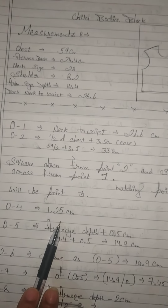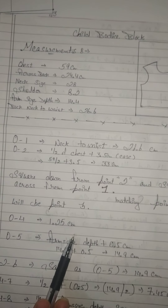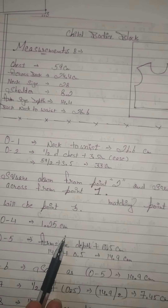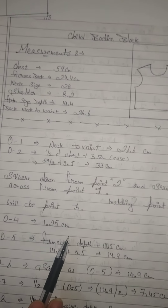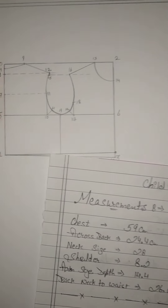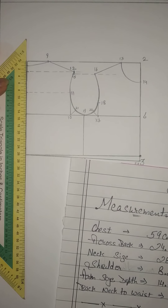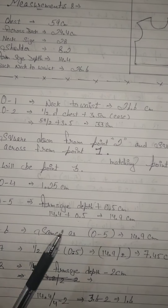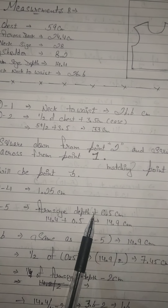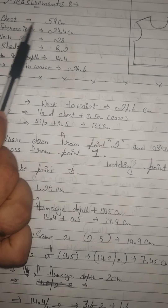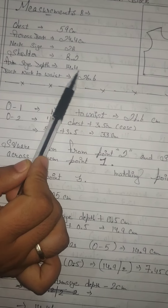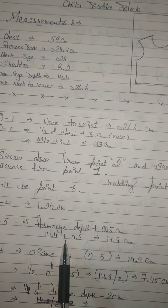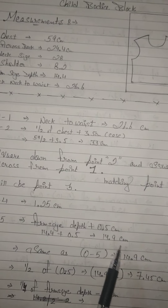After that, mark 0 to 4 — directly 1.25 cm. This is your back neck depth, meaning how far down you go for the back neck. From point number 0, go down 1.25 cm. Then mark 0 to 5, which is arm sight depth plus 0.5. Your arm sight depth is 14.4 cm, so 14.4 plus 0.5 equals 14.9 cm.